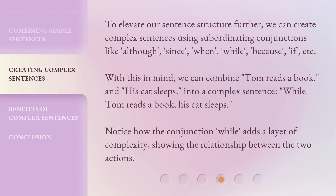To elevate our sentence structure further, we can create complex sentences using subordinating conjunctions like: although, since, when, while, because, if, etc. With this in mind, we can combine 'Tom reads a book' and 'his cat sleeps' into a complex sentence: 'While Tom reads a book, his cat sleeps.' Notice how the conjunction 'while' adds a layer of complexity, showing the relationship between the two actions.